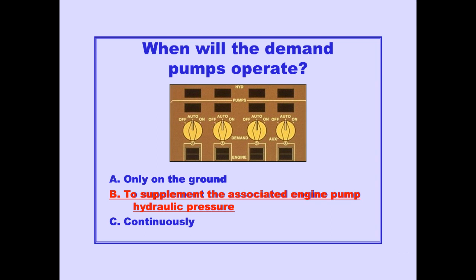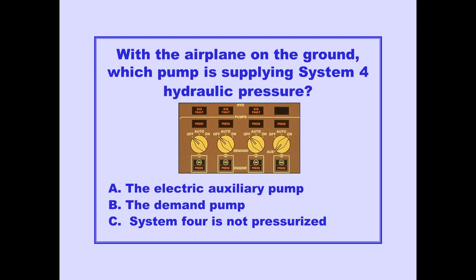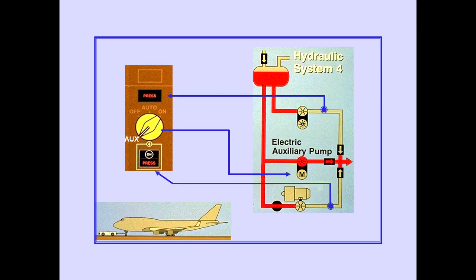Answer B is correct. Answer A is correct. The auxiliary pump is used only for ground operations. With the selector in the AUX position, the electric auxiliary pump operates when engine pump output pressure is low. The number four demand pump will not operate and the demand pump low pressure light illuminates.